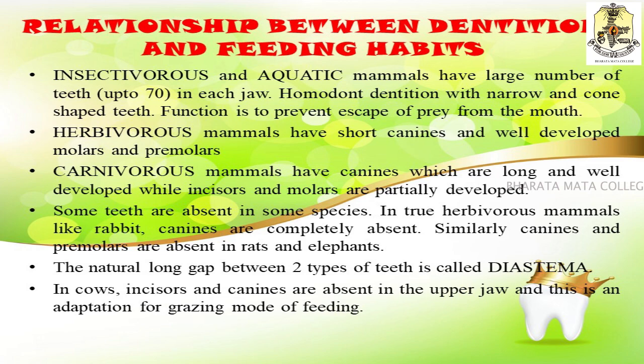A natural long gap found between two types of teeth is known as diastema. In the case of the rabbit, which is a true herbivorous mammal, the canines are completely absent, so the gap between the incisors and the premolars is called the diastema. In cows, the incisors and canines are absent in the upper region, and this is an adaptation for the grazing mode of feeding.